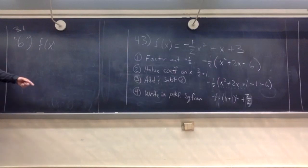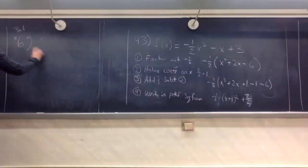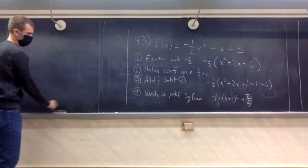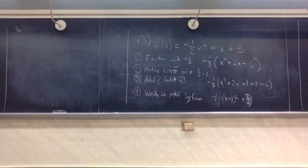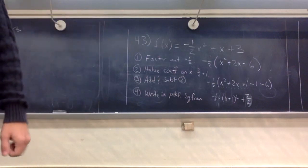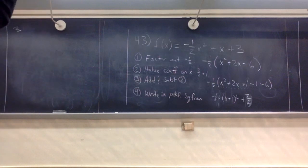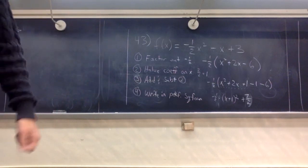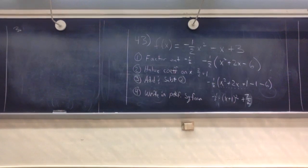You've all studied the quadratic formula, and every time you complete the square you're essentially redoing part or all of the quadratic formula. If you want to write down a formula for the zeros of any parabola, you complete the square — and that's it. The quadratic formula is just the completed-square result for the general form ax² + bx + c.